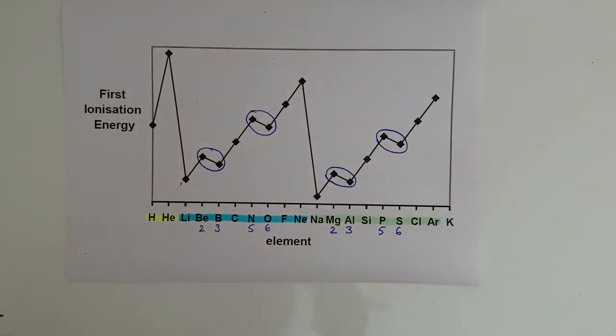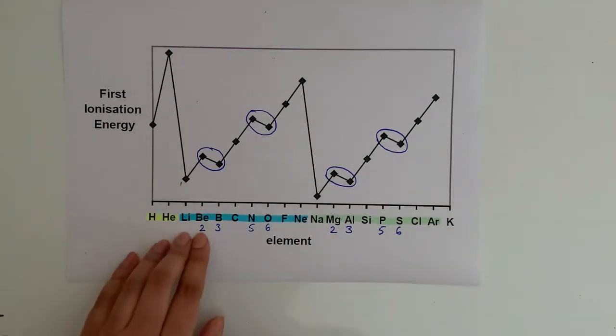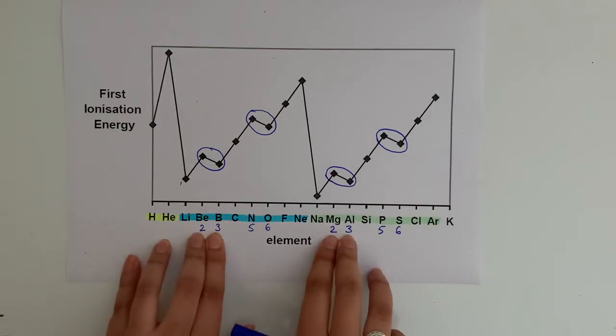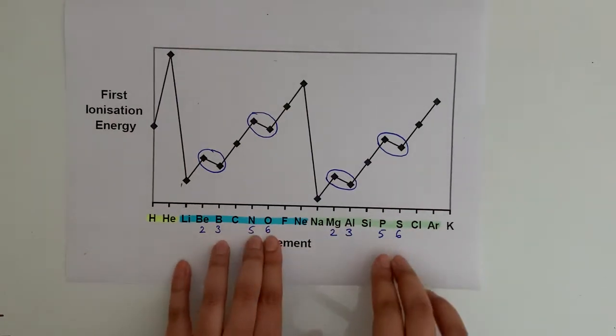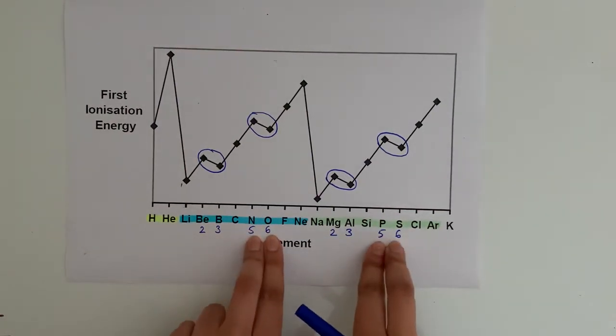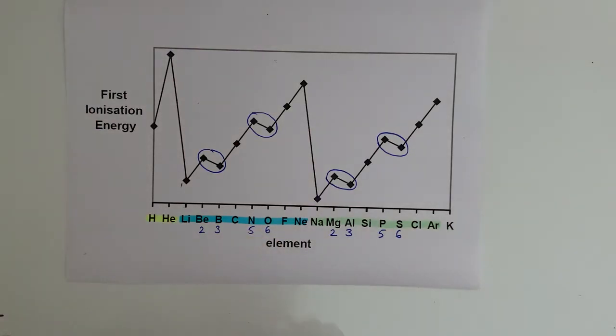As you can see, any time we go between group two and group three we have a dip. Any time we go between group five and group six, we have a dip in our ionization energy. So let's now address why we have those dips.